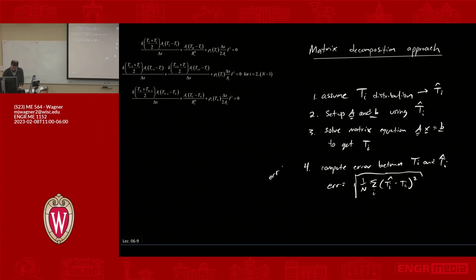Another way would be to take maybe the RMS or some statistical measure. A common way would be to say my error equals the square root of 1 over N times the sum for all I of T hat I minus TI squared. We're going to make it squared so it's always positive. If that error falls below tolerance, you've converged. If error is greater than tolerance, we haven't yet converged and we need to go back and assume a new T hat I distribution.